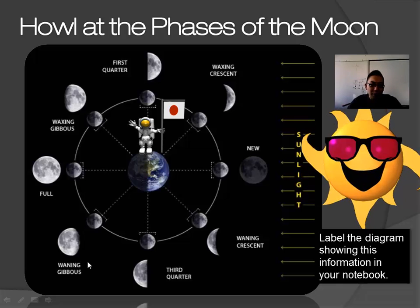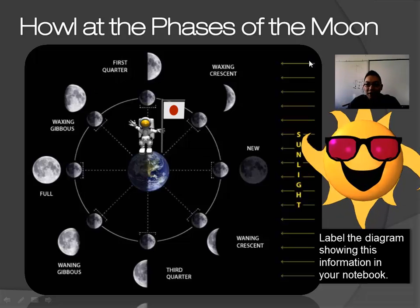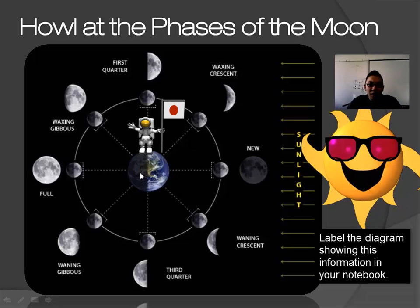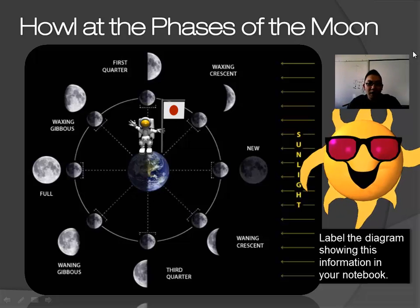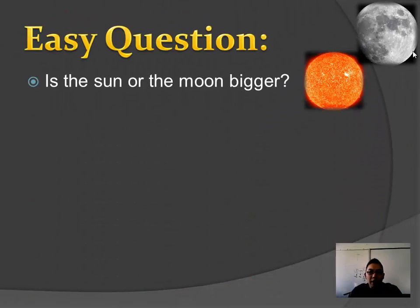The moon isn't getting smaller and bigger — bits of the moon are not being chopped off. It all depends on the angle that the sunlight is actually hitting. In this diagram, the sunlight is coming from the right, and depending on where the moon is in relation to the Earth and where you are on Earth, you get a different view of the moon.